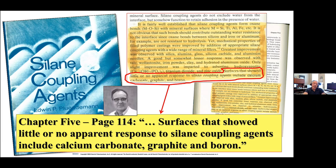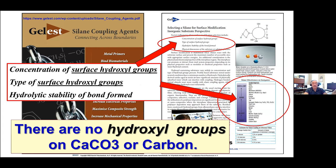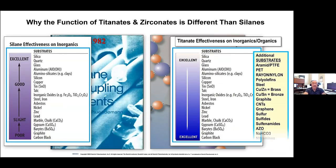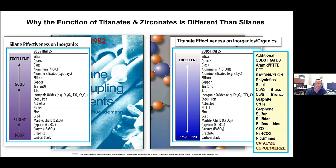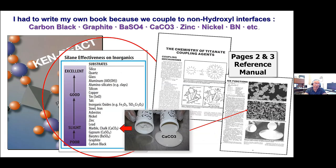If you get Pluterman's book and read page 114, Chapter 5, it says right in the book: 'Surfaces that show little or no apparent response to silane coupling agents include calcium carbonate, graphite' — which is graphene — 'and boron, like boron nitride.' And if you look at the Gelest book on silane coupling agents, the selection is based on the concentration of surface hydroxyl groups, the type of surface hydroxyl groups, and the hydrodynamic stability of the bond formed. They give you a chart showing the efficacy of silanes going from poor to excellent. My table shows that not only do we work on all of these interfaces, but we also work on sulfate, sulfenamides, azodicarbonamide, polyolefins, graphite — this is not blowing smoke, this is what they do.